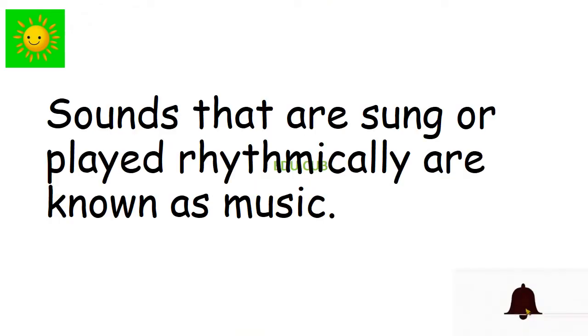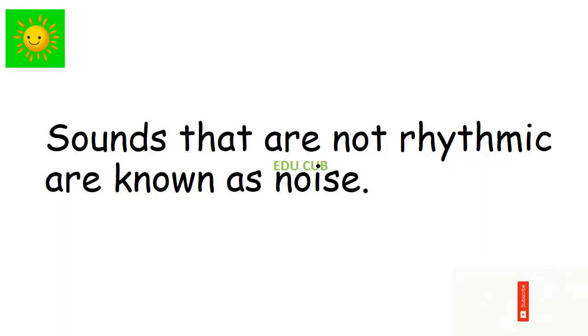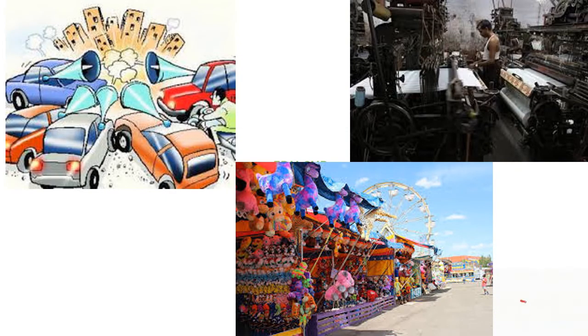Our next subtopic is music versus noise. Sounds that are sung or played rhythmically are known as music. Examples are sound created by violin, sound created by flute. Sounds that are not rhythmic are known as noise. Examples are noise of traffic, noise of machines in factories. When the volume of music is increased, it too can be disturbing.